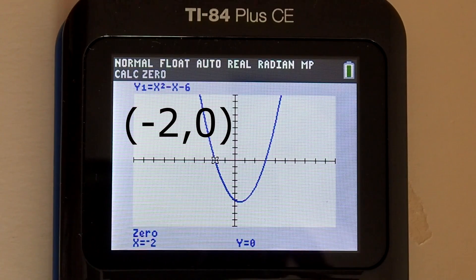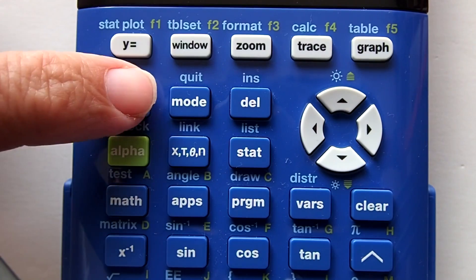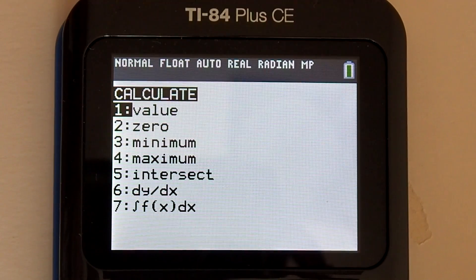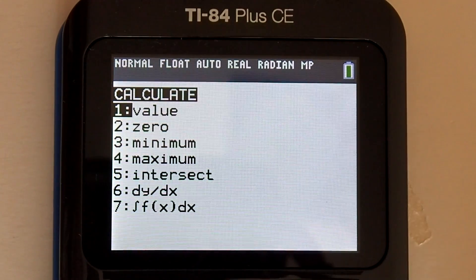To find the other x intercept we will repeat the steps. Press second, trace. Go to number 2, 0, press enter.